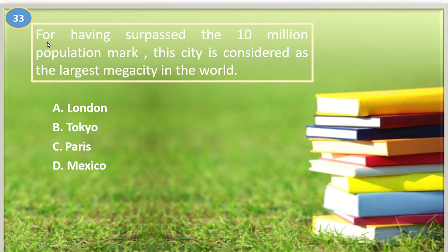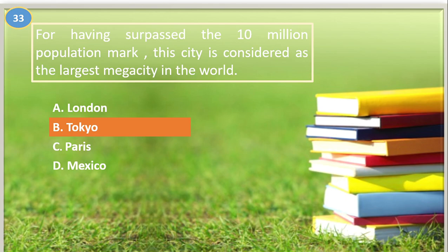Number thirty-three. For having surpassed the 10 million population mark, this city is considered the largest megacity in the world: A. London, B. Tokyo, C. Paris, D. Mexico. The answer is letter B, Tokyo, Japan, with 37.39 million population. It is followed by Delhi, then Shanghai, but the largest is Tokyo.